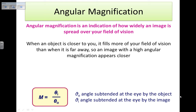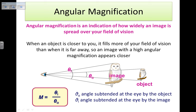I can also have angular magnification, which indicates how widely an image is spread over our field of vision — it's about angles rather than lengths. When an object is closer to you, it fills more of your field of vision; when further away, it takes up less. An image with higher angular magnification seems to be closer. The formula is M = θᵢ/θ₀, where θᵢ is the angle subtended by the image (from the eyepiece) and θ₀ is the angle subtended by the object.